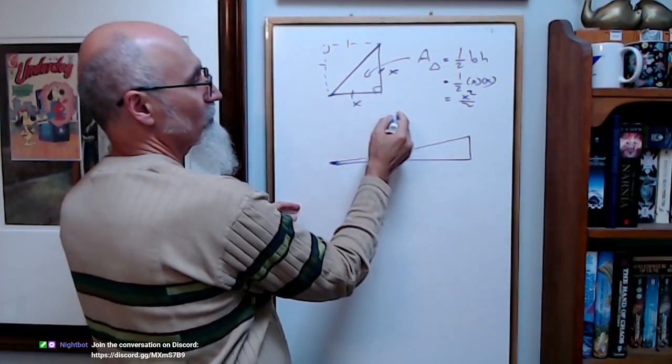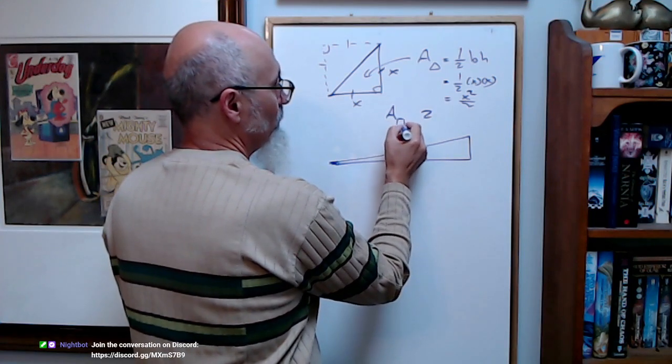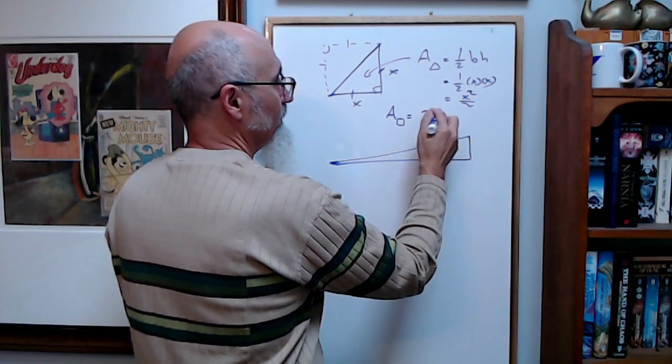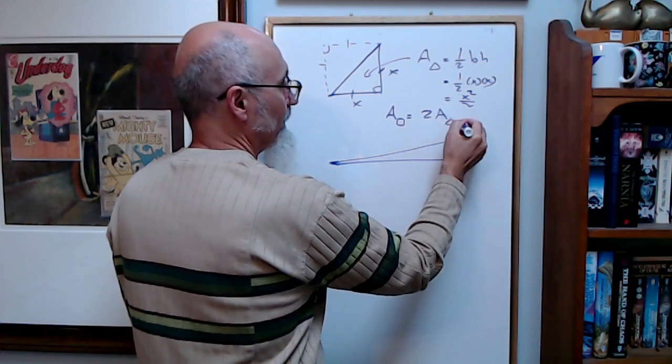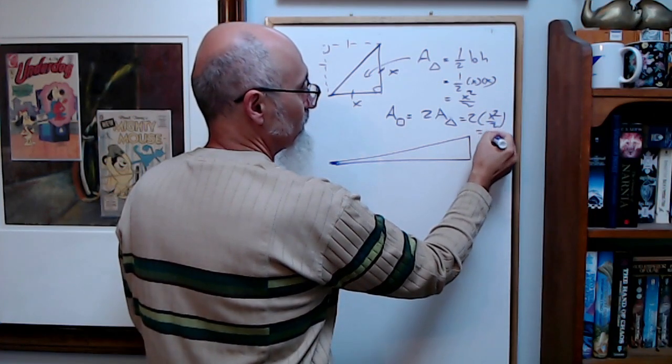And if you have two of them to get the square, you double this. So area of a square is equal to two times the area of a triangle, which is equal to two times X squared over two, which is equal to X squared.